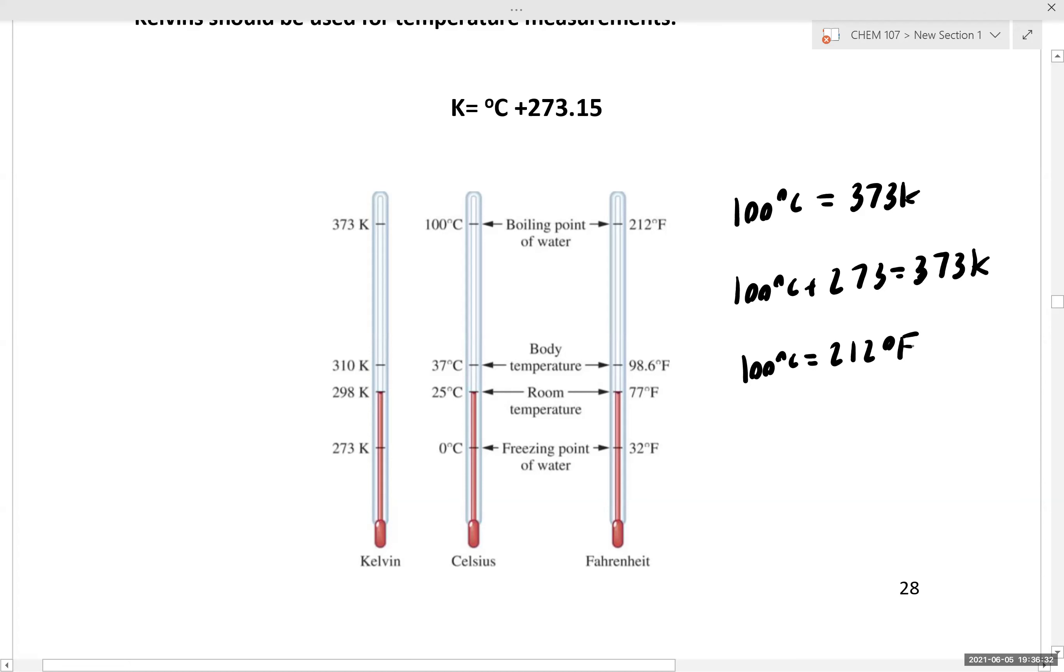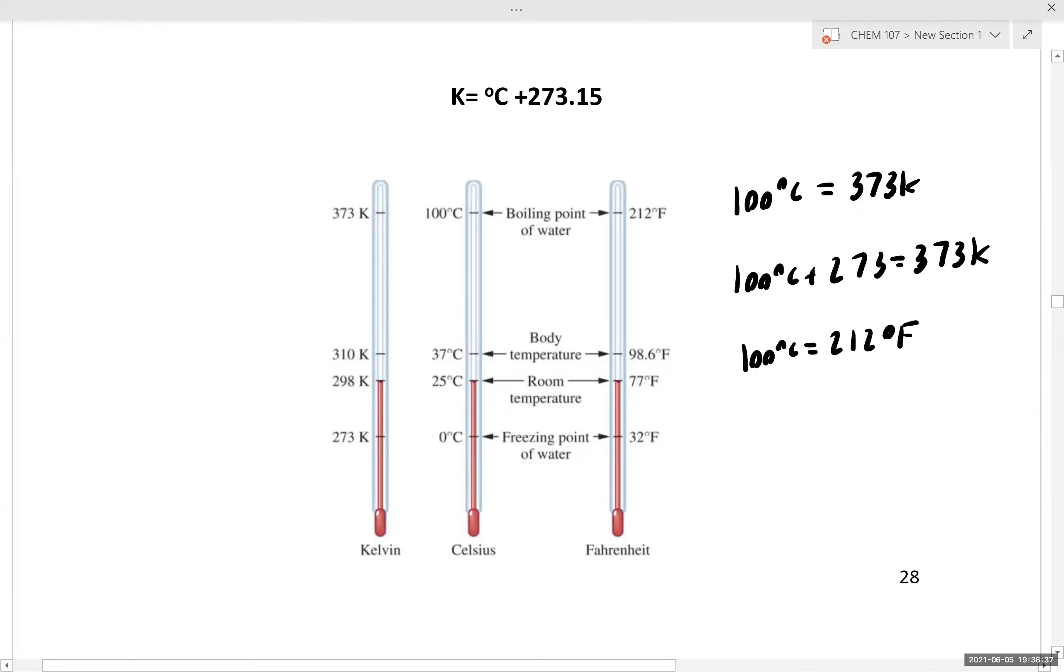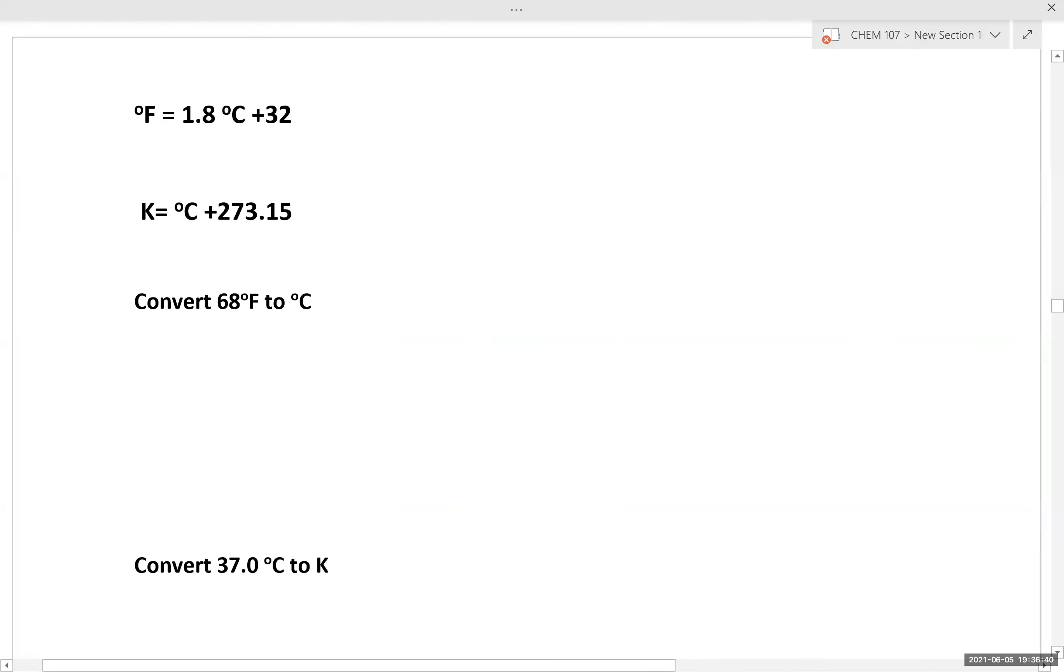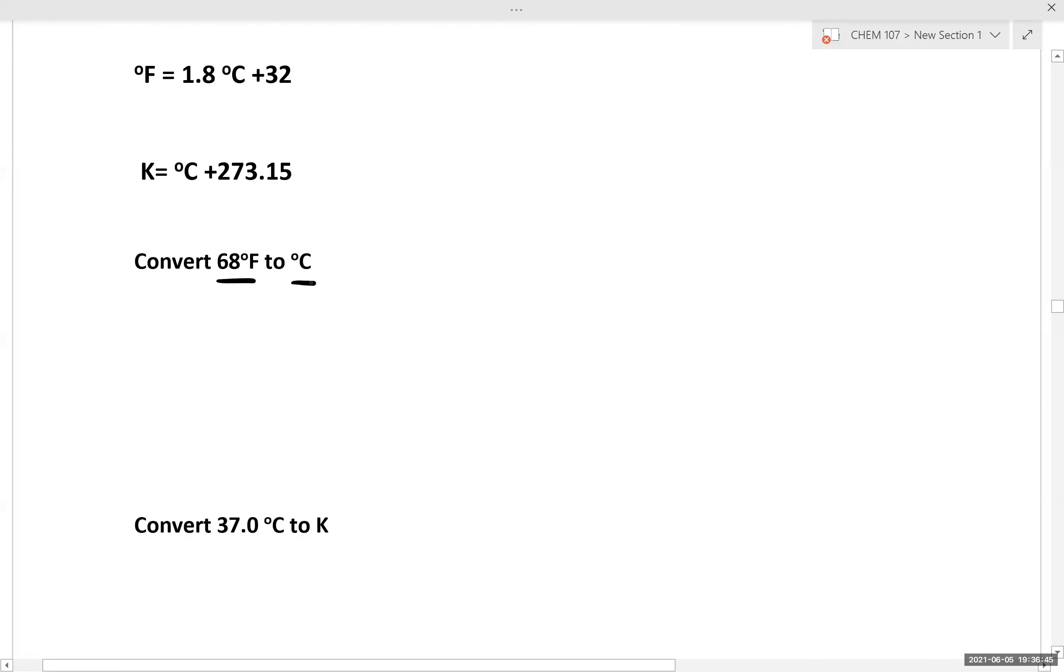So let's now practice converting between Fahrenheit, Celsius, and Kelvins with a few examples. In the first case we're asked to convert 68 degrees Fahrenheit to Celsius. We have °F = 1.8 °C + 32. To rearrange this, we see °C = (°F - 32) / 1.8.